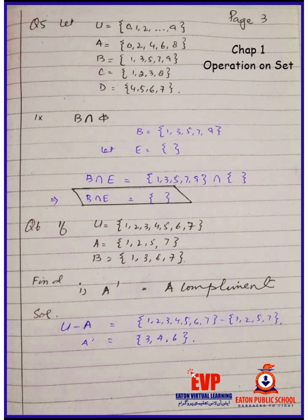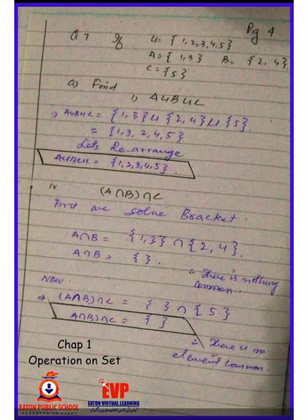Moving on to the next concept: performing union or intersection on more than two sets — for example, A union B union C, or A intersection B intersection C.